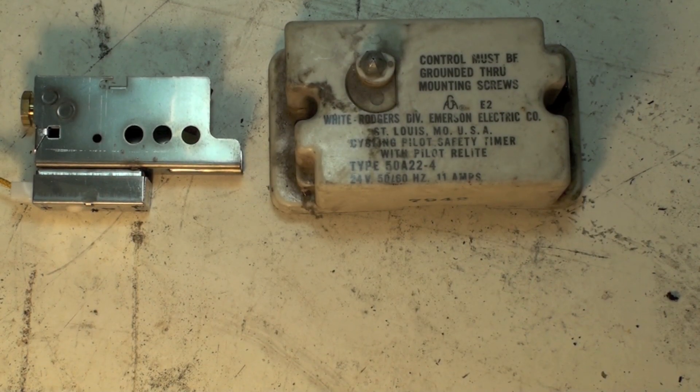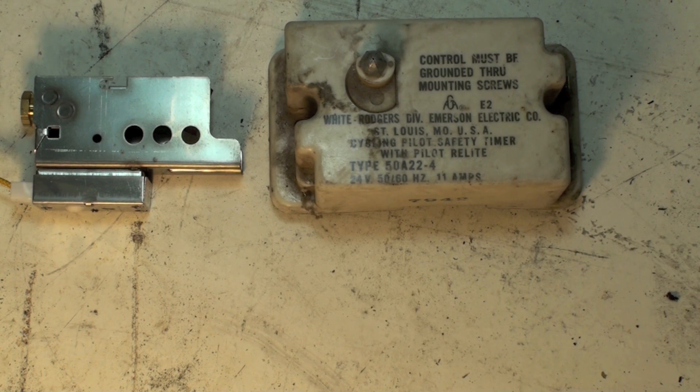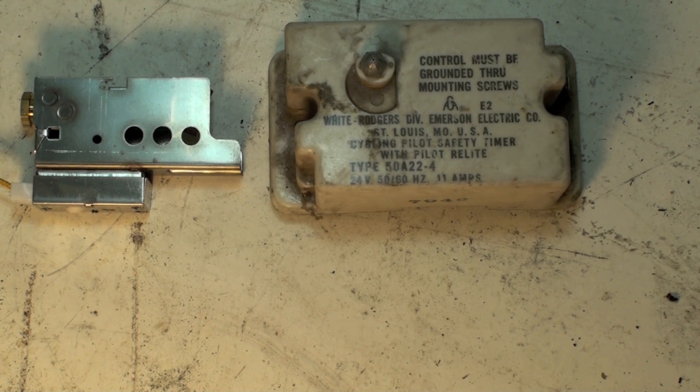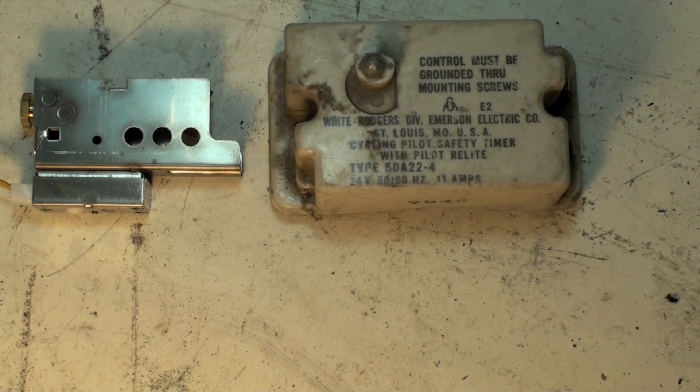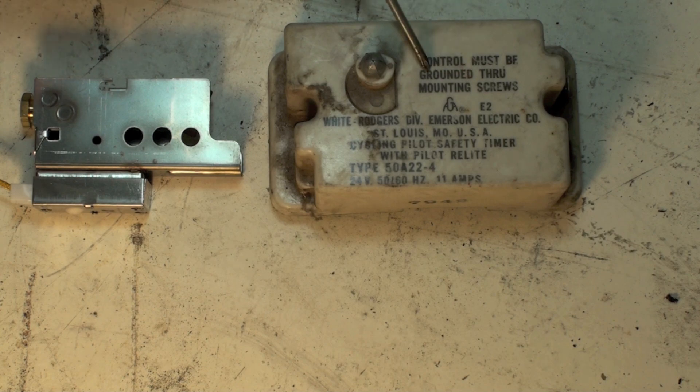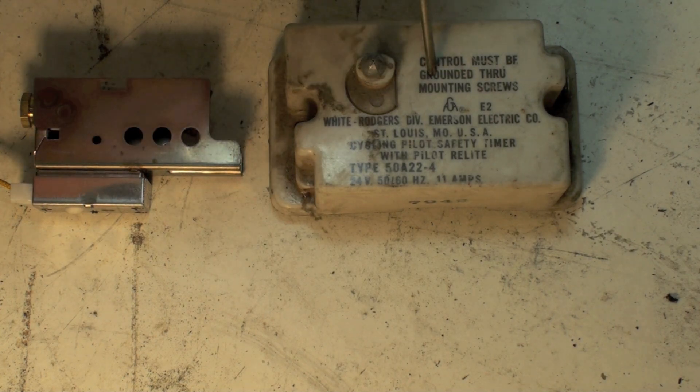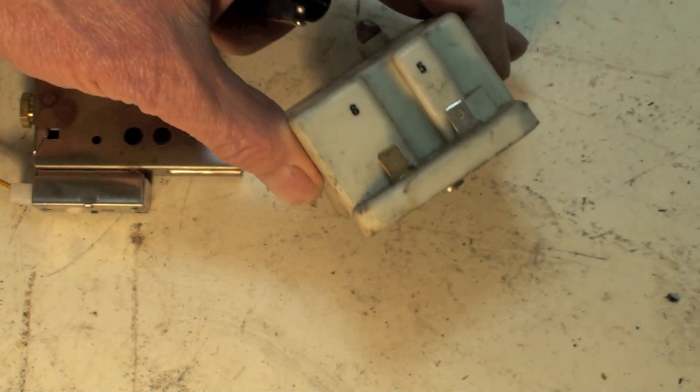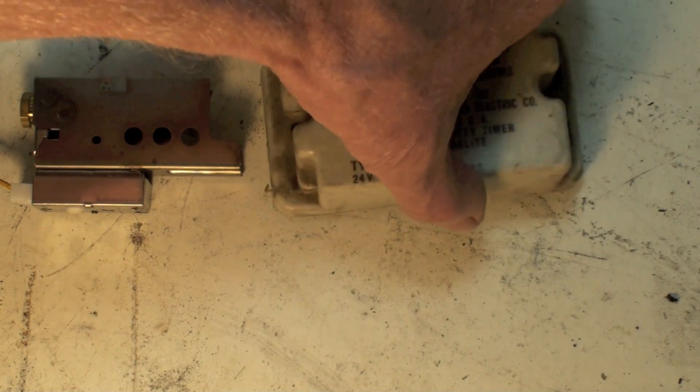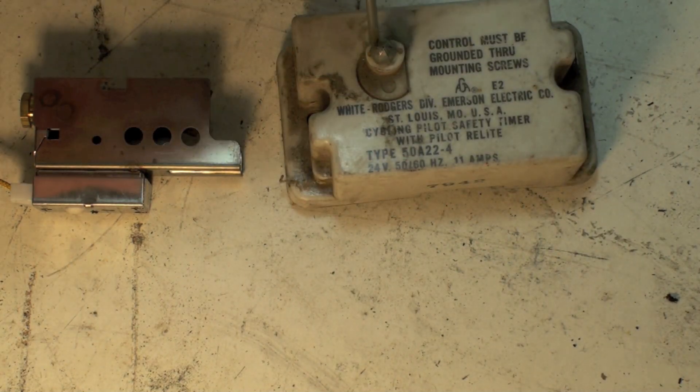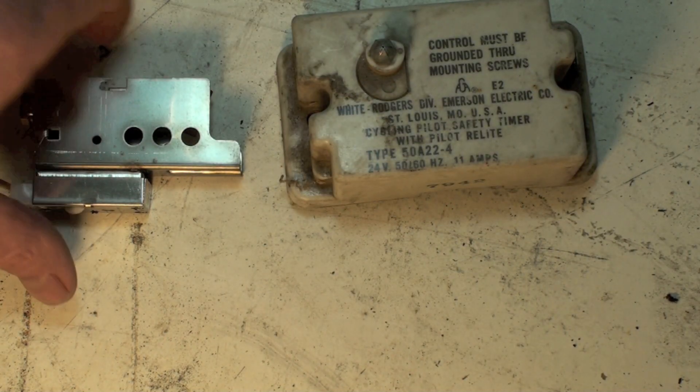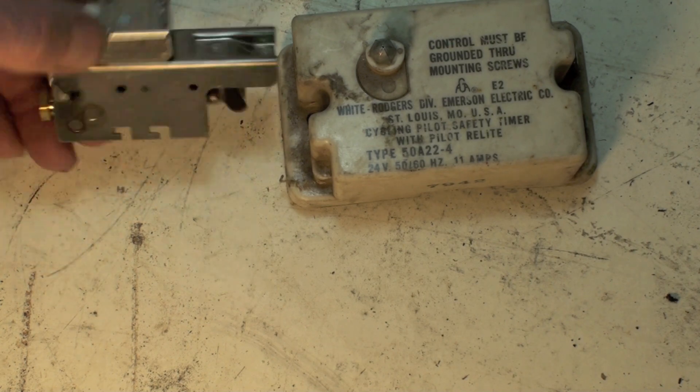This is one of the early forms of a pilot relight system in case the pilot went out. This is a spark coil. Power is fed in through these two terminals and it's raised up to eight or ten thousand volts, comes out of here and sparks across a gap in this pilot assembly.